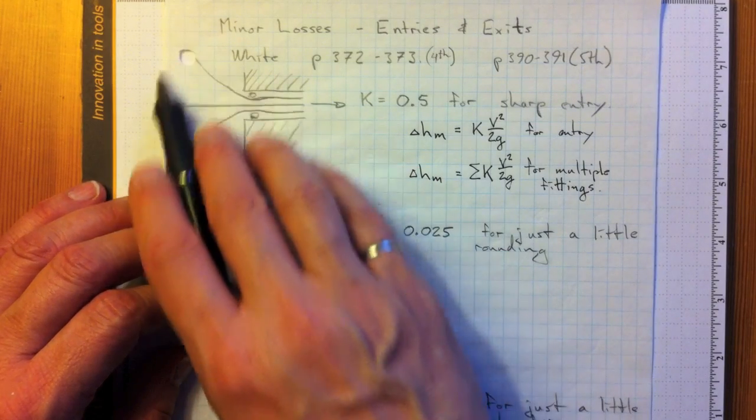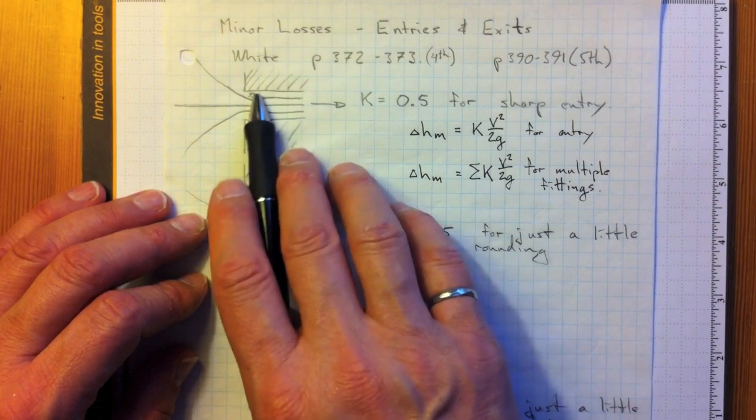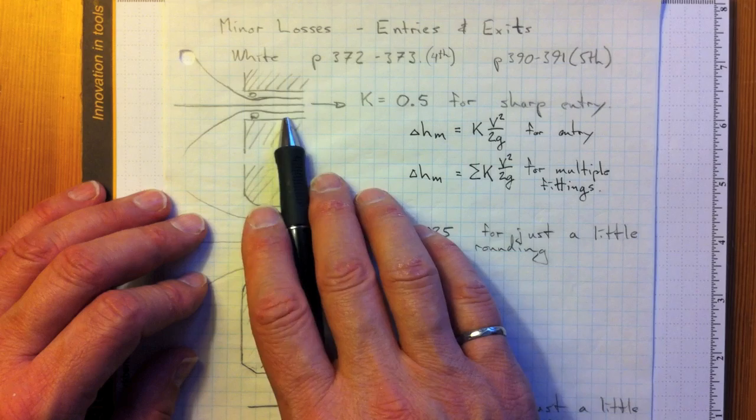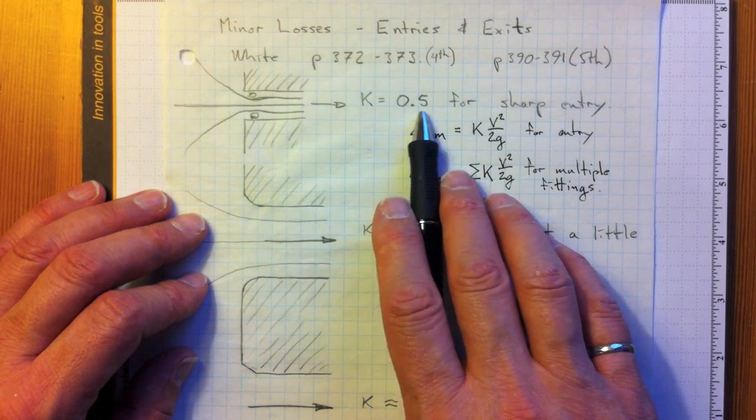So if we have a reservoir out here with a sharp-edged entry like this, these recirculation zones take a fair bit of energy out. And the result is that they have a minor loss coefficient of 0.5.